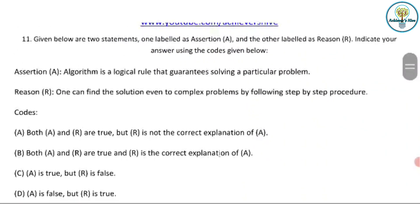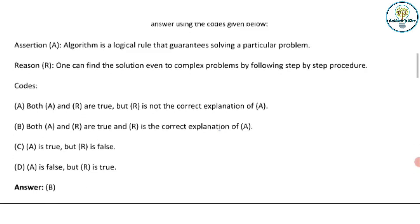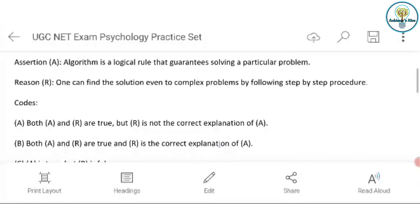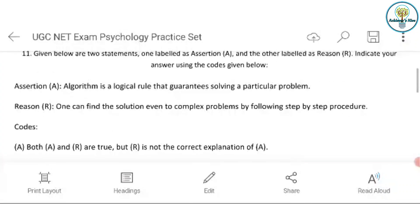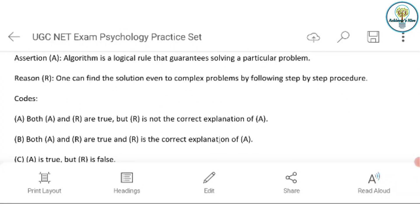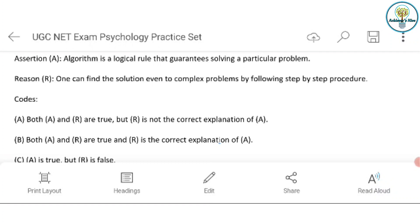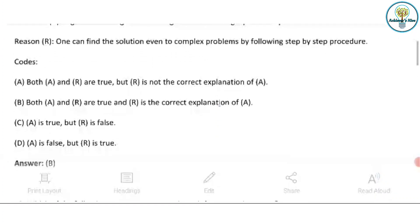Now two statements are given to us. One labeled as assertion and another is reason. So you have to indicate your answer using the given code given below. Algorithm is a logical rule that guarantees solving a particular problem. One can find the solution even to complex problems by following step by step procedure. Now we are given four codes here. We see both are true. Both are correct. Option A - assertion and reason both are correct, but they are not interrelated with each other. So it's not the correct explanation.